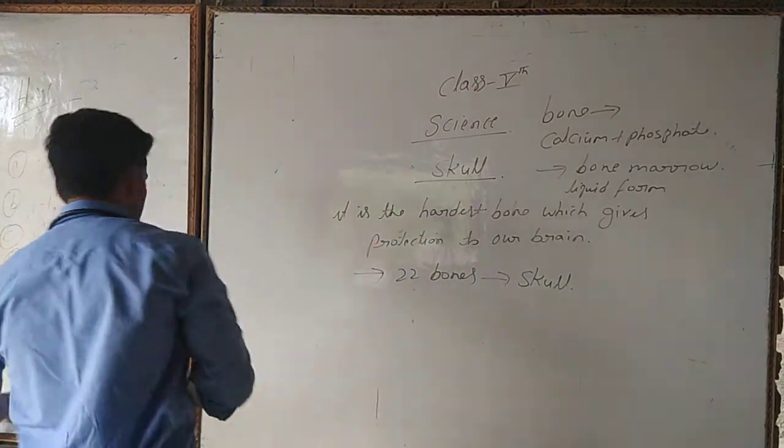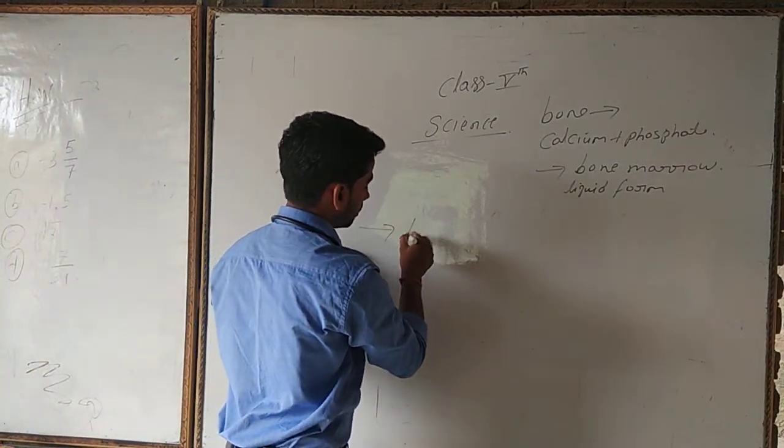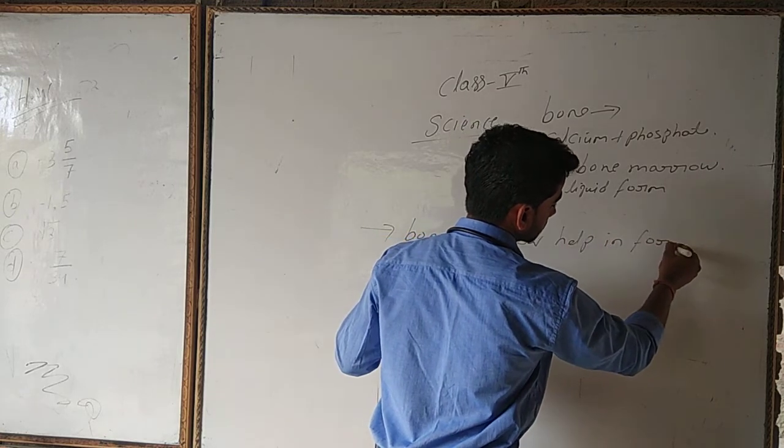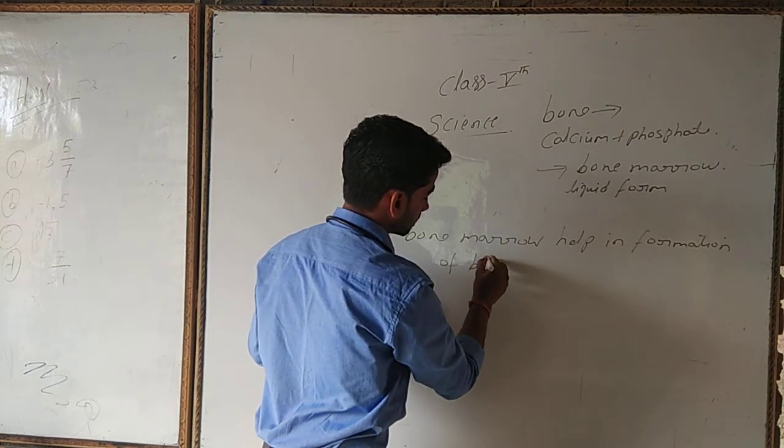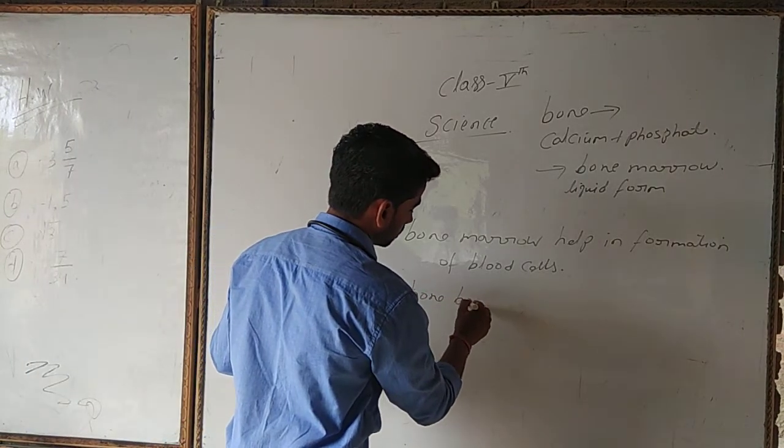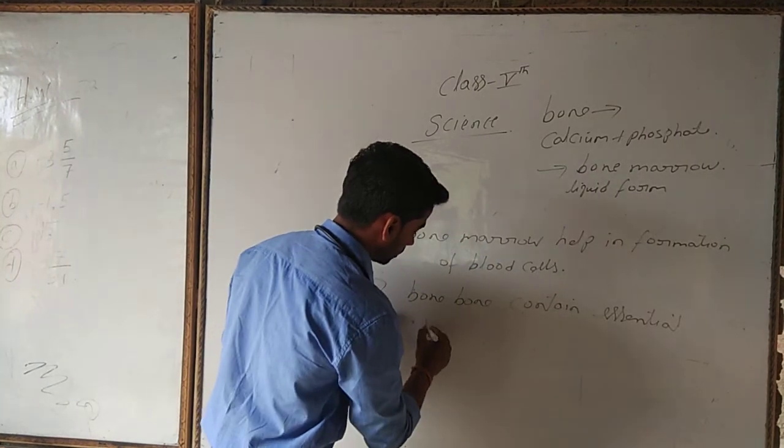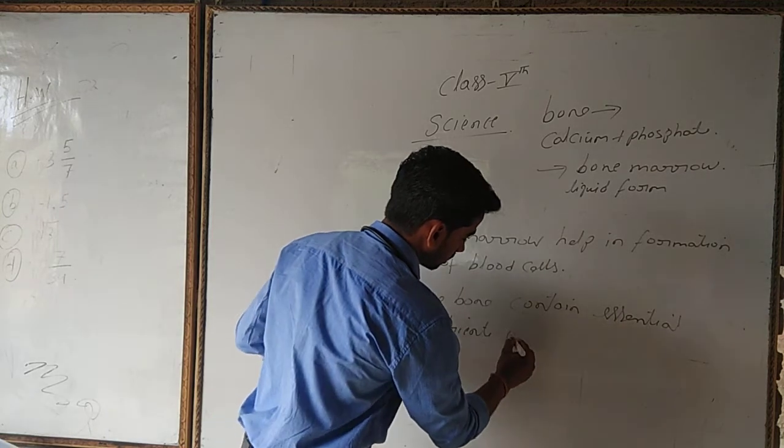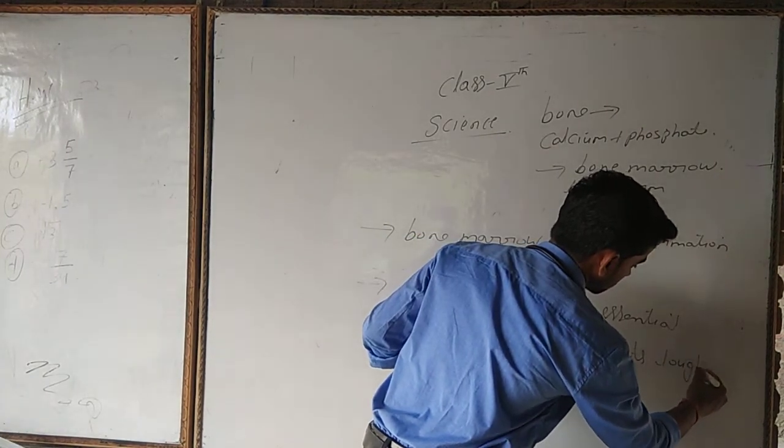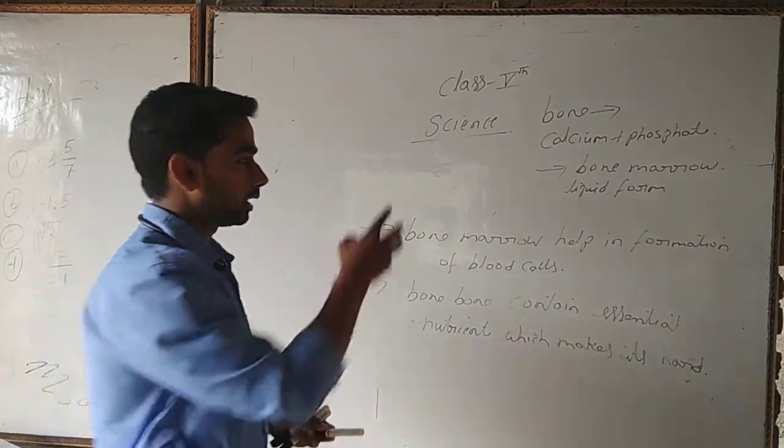There are many functions of bone marrow. Bone marrow helps in the formation of blood cells. Bone marrow contains essential nutrients which make it tough and hard for the body. So mainly, inside bone there is bone marrow.